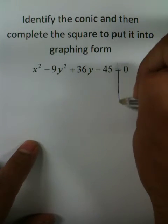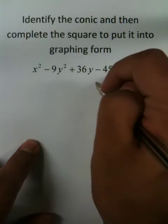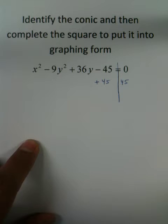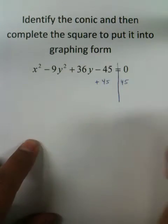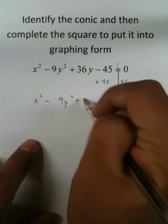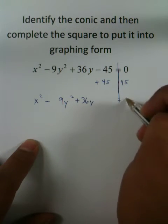What you need to do is now complete the square. We'll add this 45 to the other side because it's an extra piece. We don't really need it there. And so, you'll have x squared minus 9y squared plus 36y equals 45.